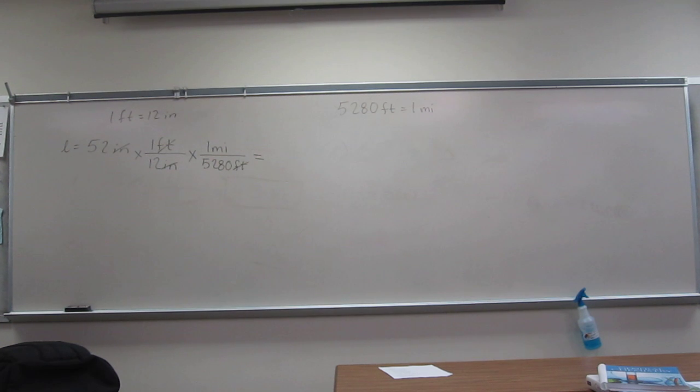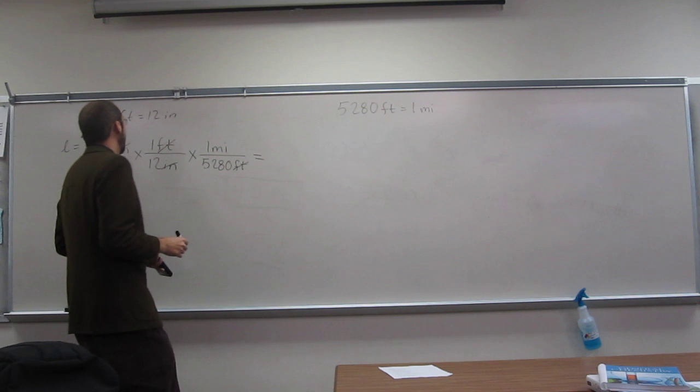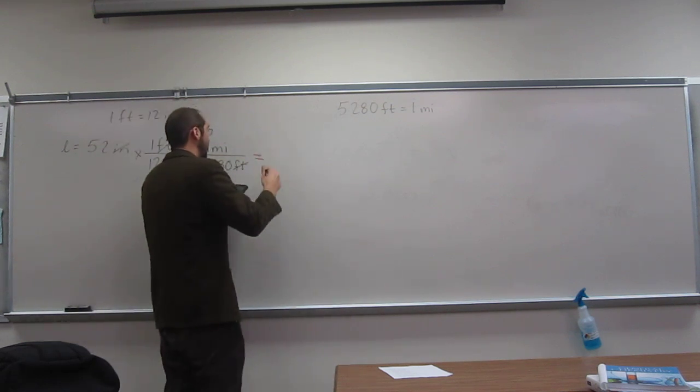So all we've got to do now is plug and chug. So 52 divided by 12, divide that answer by 5,280. And 2 sig figs.